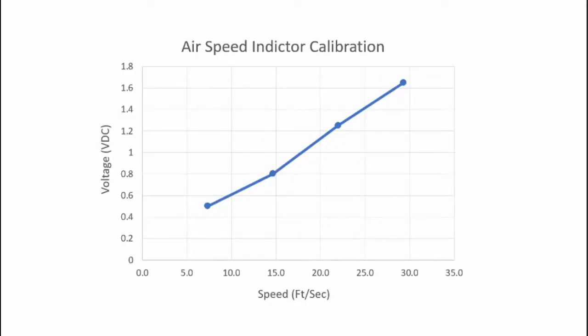Here's the data obtained from the airspeed indicator calibration. You can see when the motor was generating about 0.5 volts, I was at a velocity of approximately 7 feet per second. And when the motor was generating a voltage of about 1.65 volts, I was running about 29 feet per second. The data is fairly linear, so that's always a good thing.